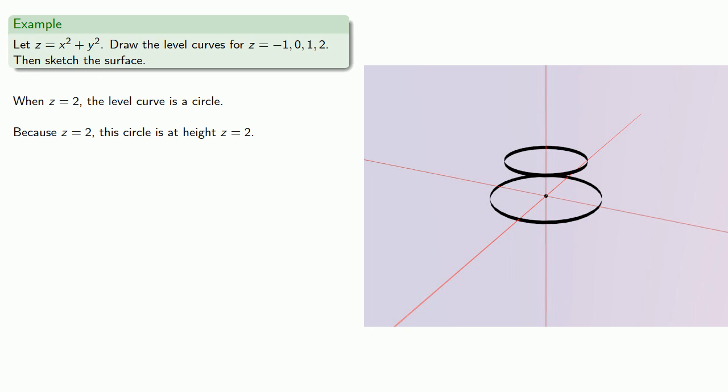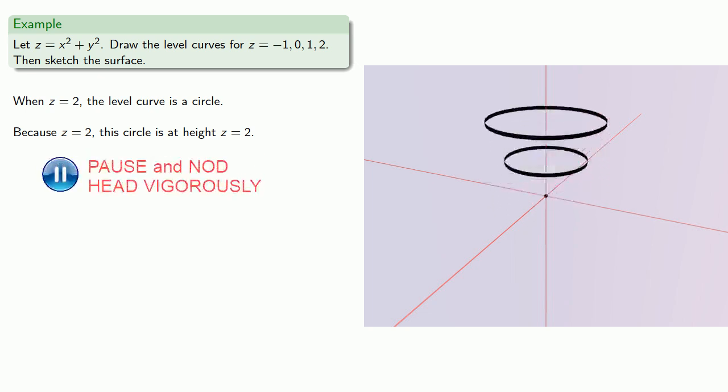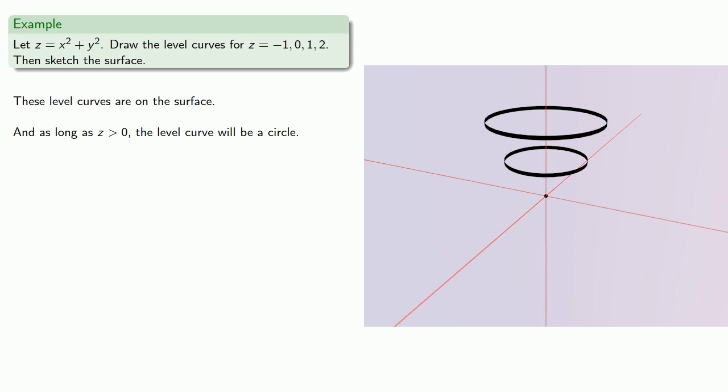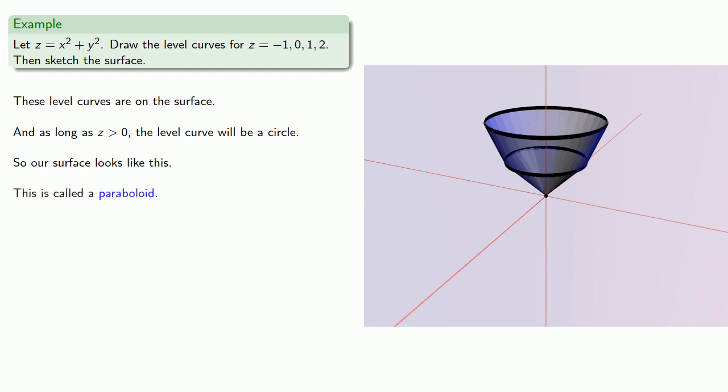Now the important thing to keep in mind is that these level curves are on the surface itself. And as long as z is greater than 0, the level curve will be a circle. And if z is negative, there are no points on the curve. And so our surface will look something like this. And we call this type of surface a paraboloid.